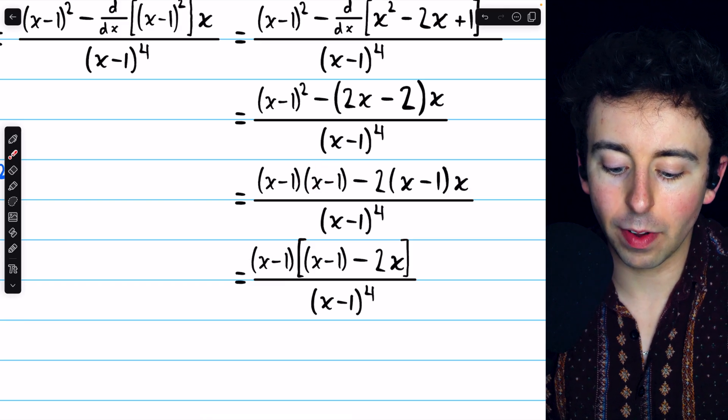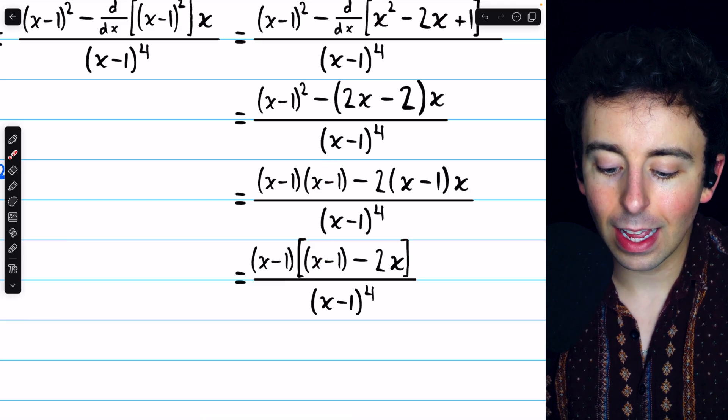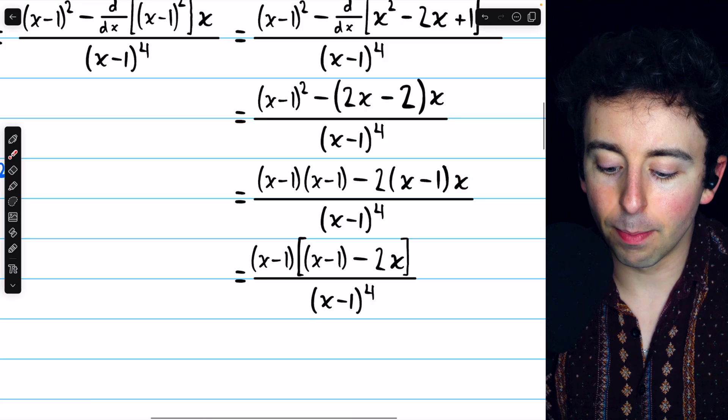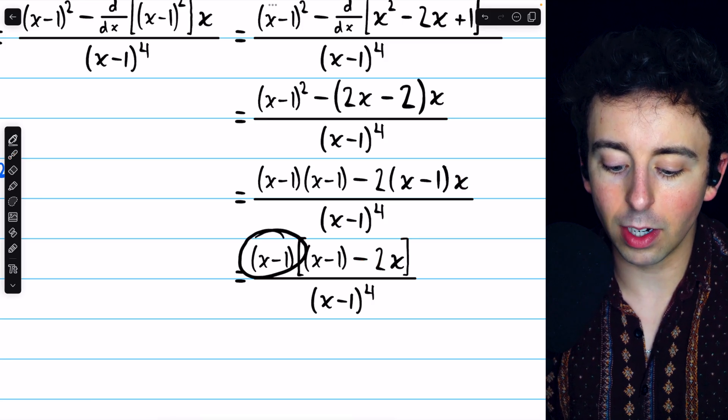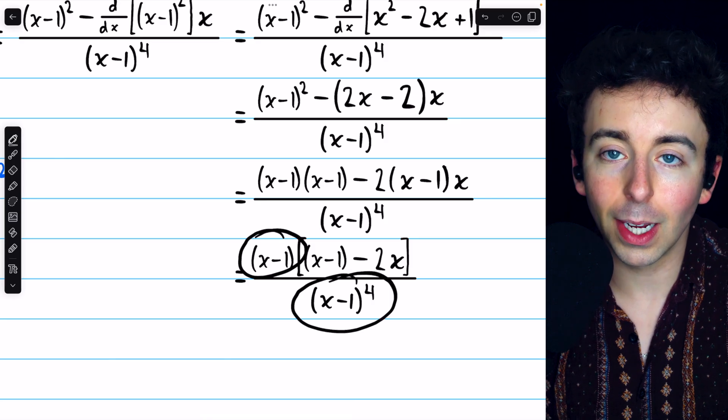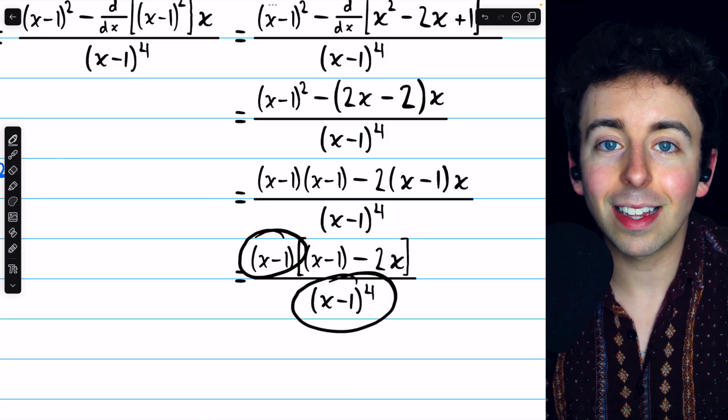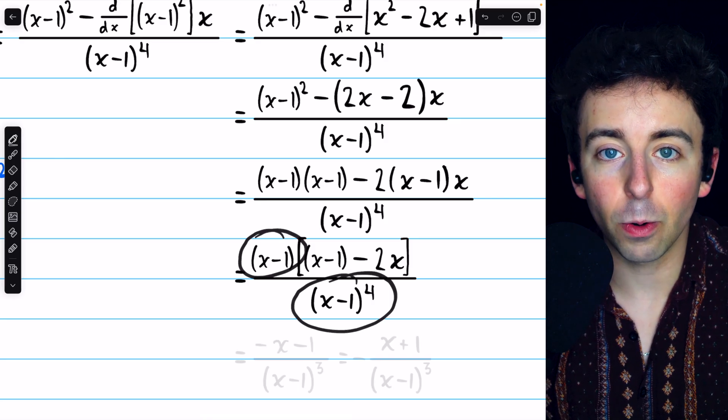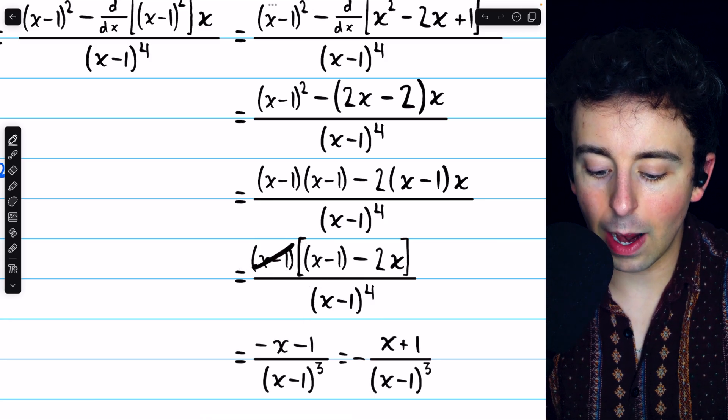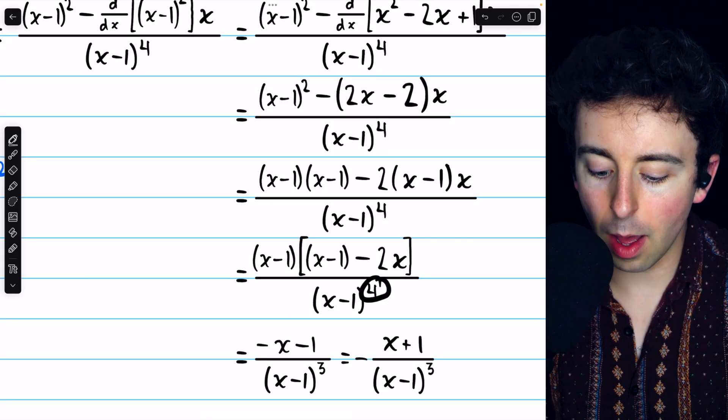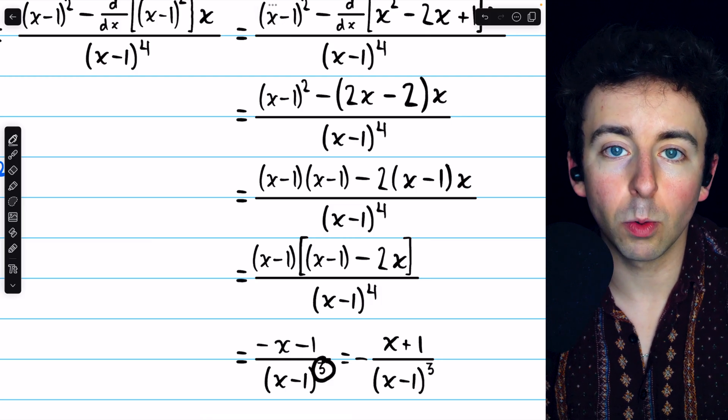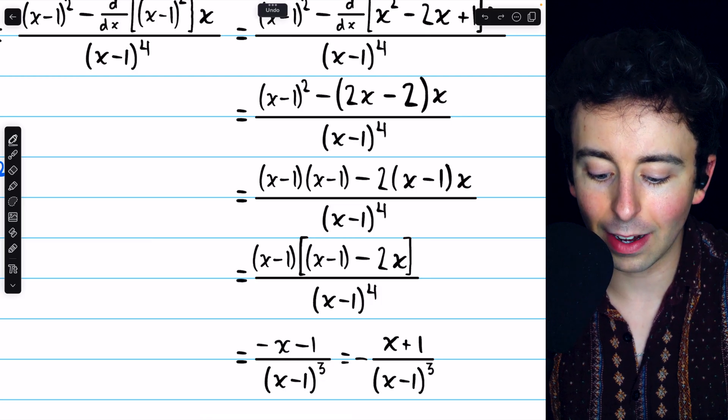That leaves one factor of x minus 1 in the term on the left. And on the right, we're just left with minus 2x. Now we see that we have an x minus 1 in the numerator and plenty of x minus 1s in the denominator. So let's cancel a pair of those out. Canceling this x minus 1 out with one of these x minus 1s makes the power in the denominator become 3. We've canceled out one of those four factors.